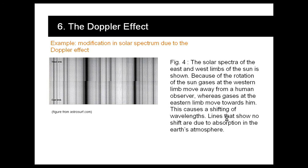This is because the Sun rotates and one part of it moves towards us and the other one moves away from us. So this causes a shifting of wavelengths.